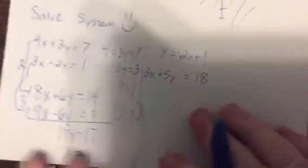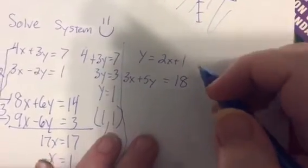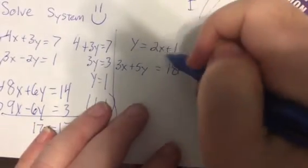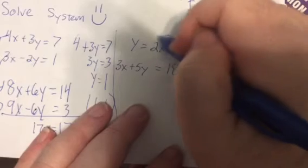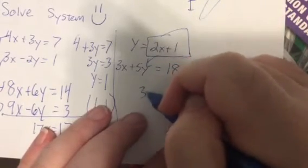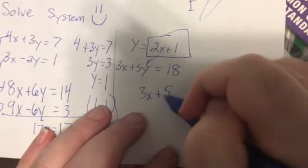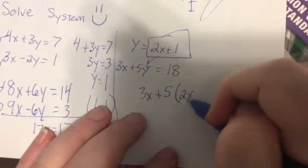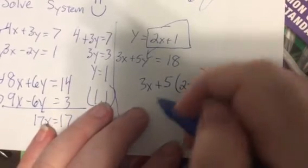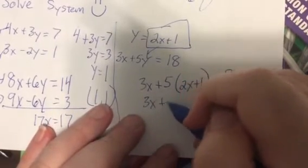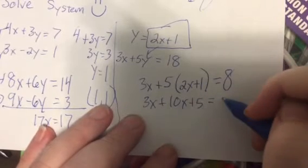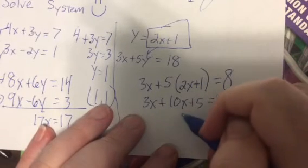Now I picked easy numbers, might be a little bit harder on the test to keep you awake. Now look how this is set up for substitution. It's already solved, so why not take this and put it right in for y? Oh my goodness, how straightforward can you go? So let's see, we'd have 3x plus 10x plus 5 equals...